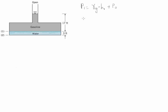To calculate the value of gamma for the gasoline we're going to use the specific gravity. We know that specific gravity is defined as the density of the fluid, in this case gasoline, divided by the density of water. Specific gravity can also be defined in terms of specific weight — so the specific weight of gasoline divided by the specific weight of water. Therefore the specific weight of gasoline is simply the specific gravity times the specific weight of water.